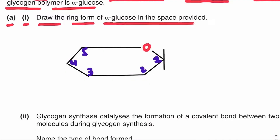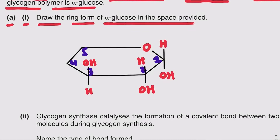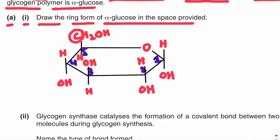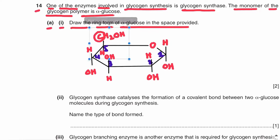At carbon number one, because this is alpha glucose, hydrogen is above the plane of the ring and OH is below. At carbon number two, H is above the plane and OH is below. At carbon number three, OH is above the plane and H is below. At carbon number four, H is above and OH is below. At carbon number five, CH2OH is above the plane — this C is carbon number six — and below the plane is hydrogen. So this is the alpha glucose molecule.